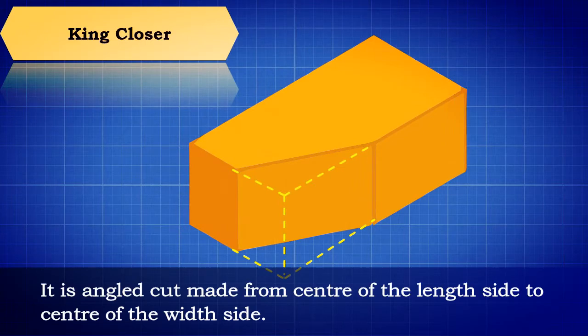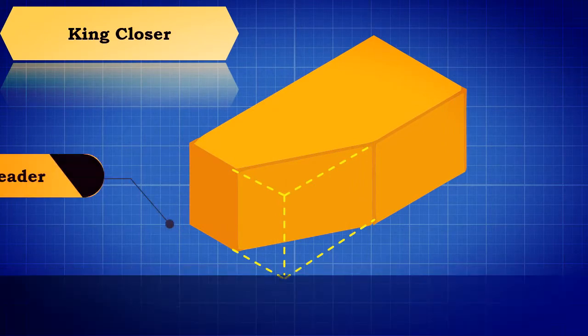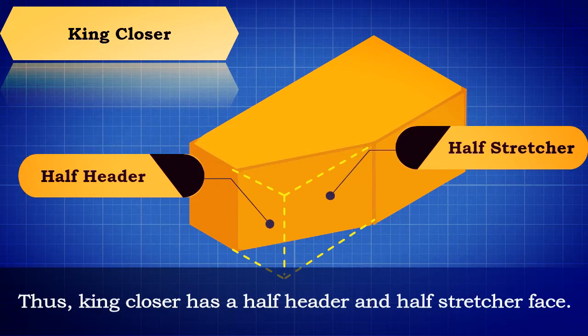King Closer: It is an angled cut made from center of the length side to center of the width side. Thus, King Closer has a half-header and half-stretcher face.